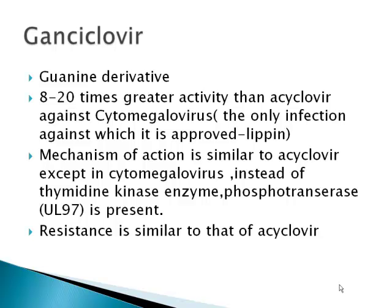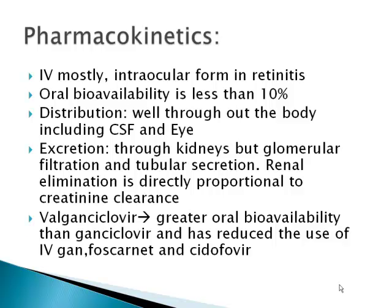Ganciclovir is a guanine derivative, very similar to acyclovir. It is 8 to 20 times more active than acyclovir against cytomegalovirus. According to Lippincott, CMV is the only infection against which ganciclovir is actually approved, because it has a very bad side effect profile. The mechanism of action is similar to acyclovir, except in CMV, unlike herpes viruses, there is no thymidine kinase — instead there is another kinase enzyme, phosphotransferase UL97. Resistance is also similar to acyclovir. Pharmacokinetics: it is usually given IV; intraocular form is given in CMV retinitis patients.